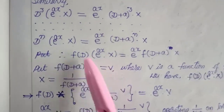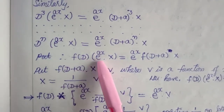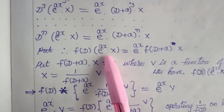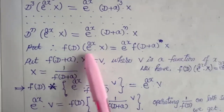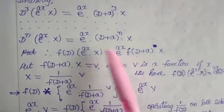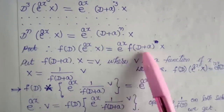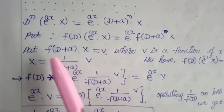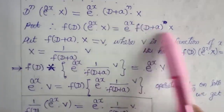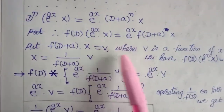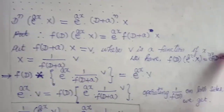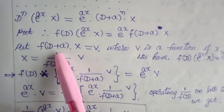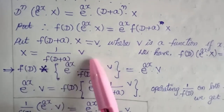Next, instead of writing D^n, we write it as f of D. So f of D into e^(ax) into χ can be written as e^(ax) into f of (D plus a) into χ. Then we put f of (D plus a) into χ, which is on the RHS, equal to v, where v is a function of x. From this, χ is equal to 1 by f of (D plus a) into v.